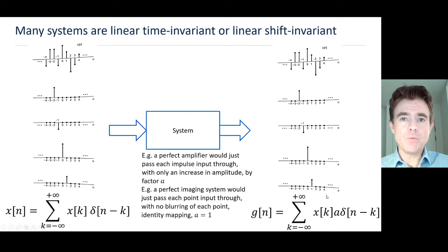With various systems that we're considering, such as imaging systems, electronic circuits, whatever the system might be, many of them turn out to be what's known as linear time invariant for temporal signals or linear shift invariant for spatial signals. And that means that a very simple process is going on.